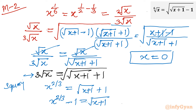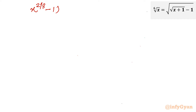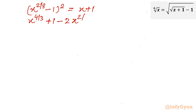Squaring both sides: (x to the power 2 by 3 minus 1) squared equals x plus 1. Expanding: x to the power 4 by 3 minus 2x to the power 2 by 3 plus 1 equals x plus 1. The ones cancel, leaving x to the power 4 by 3 minus 2x to the power 2 by 3 minus x equals 0.